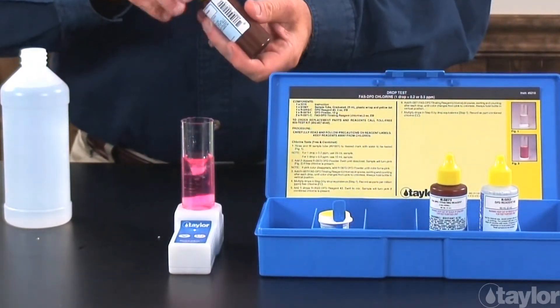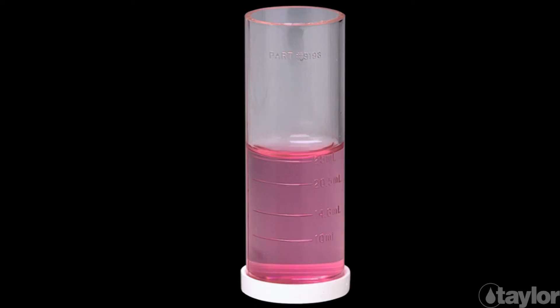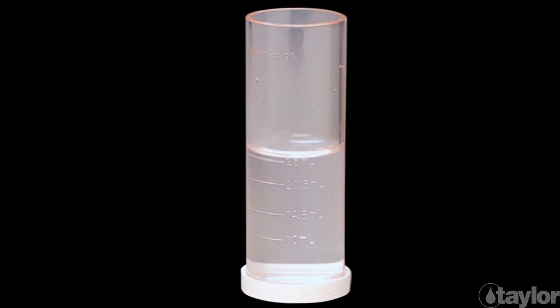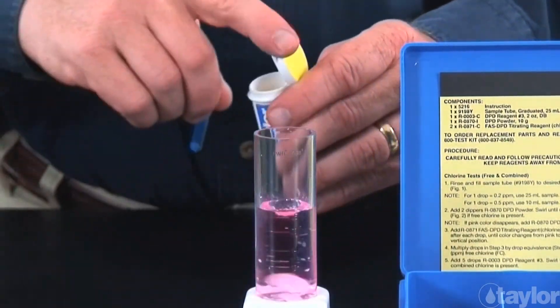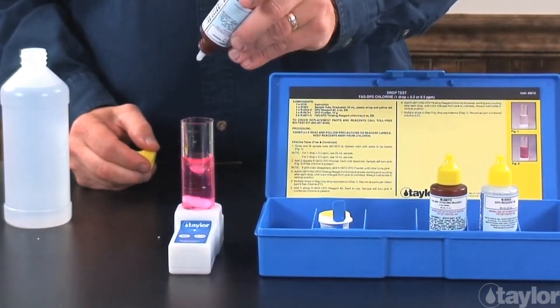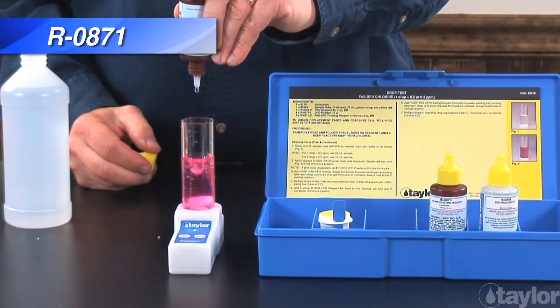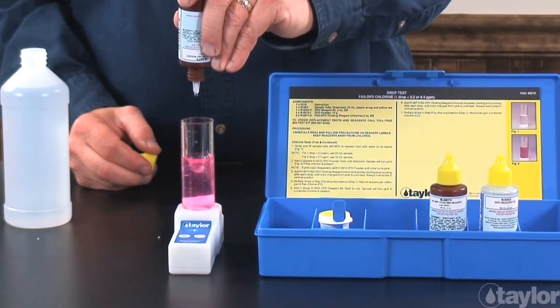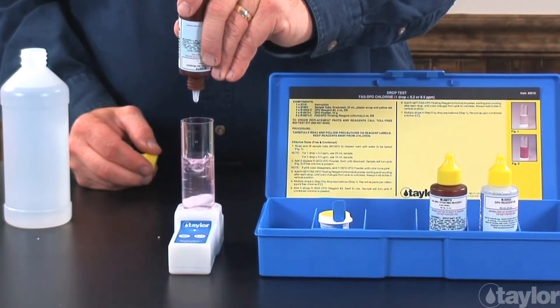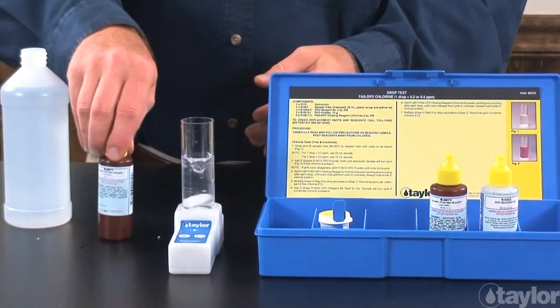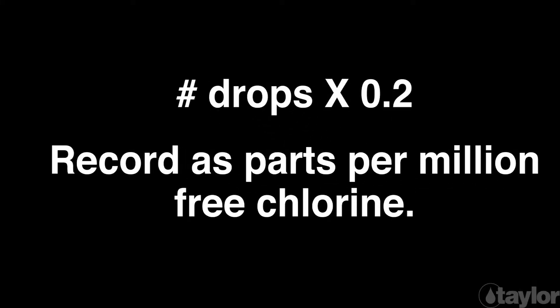If free chlorine is present, the sample will turn pink. If the pink color disappears, continue adding the DPD powder a dipper at a time, mixing between additions until the sample turns pink again. Add reagent 871 for chlorine drop-wise, swirling and counting after each drop until the sample goes from pink to colorless. Multiply the drops needed to make the color change by the appropriate drop equivalents — we will use 0.2, which correlates with our 25 ml sample size. Record the result as parts per million free chlorine.